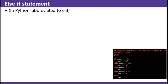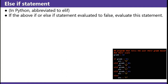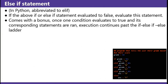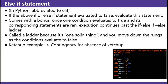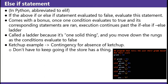Else if statement — in Python, it's abbreviated to elif. If the above if or else if statement evaluated to false, evaluate this statement. It comes with a bonus: once one condition evaluates to true and its corresponding statements are run, execution continues past the if/else if/else ladder. Call it a ladder because it's one solid thing and you move down the rungs as the conditions evaluate to false. This program on the bottom right is a grade scale: if your grade is greater than 92 it's an A, else if greater than 84 it's a B, greater than 76 it's a C, greater than 69 it's a D, else it's an F. If you didn't have the else ifs, if you got an A you would also get B, C, D, and F because there's no signal to stop early.